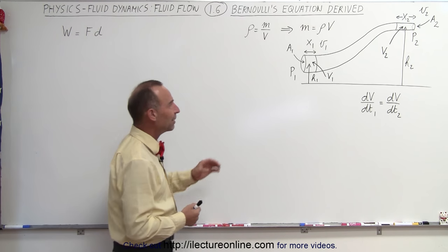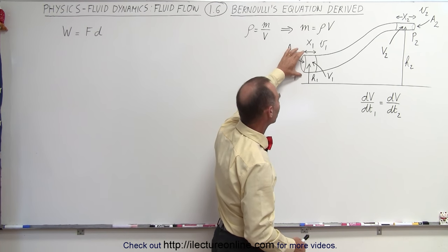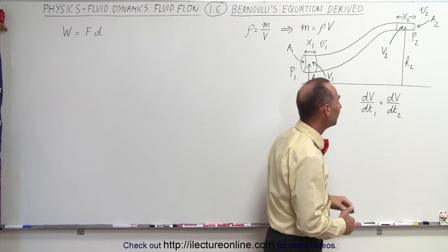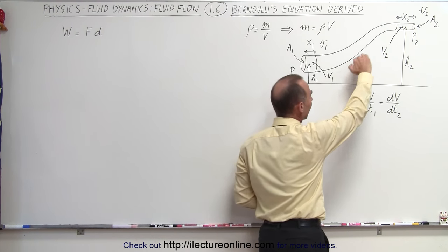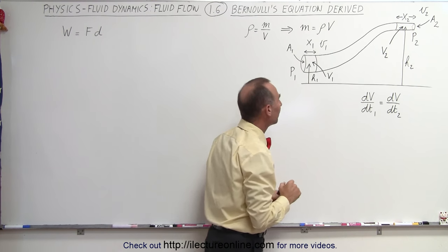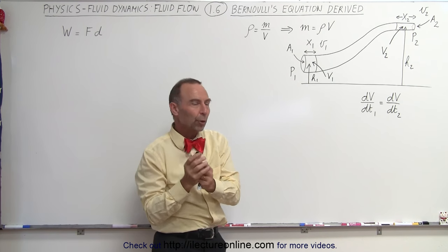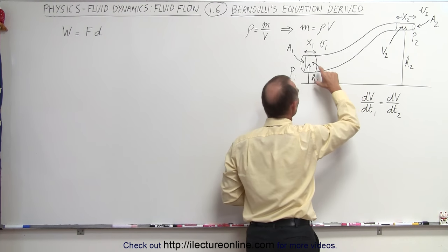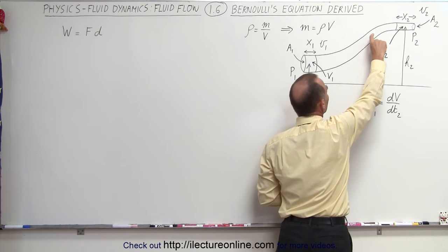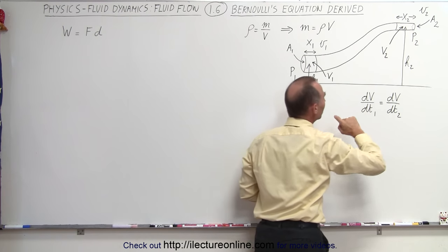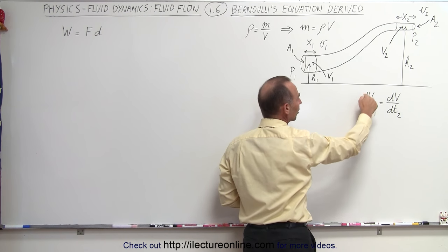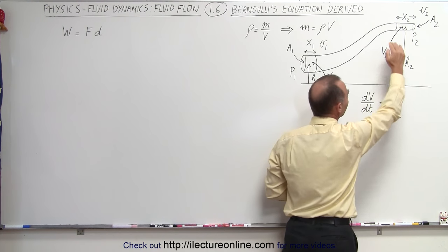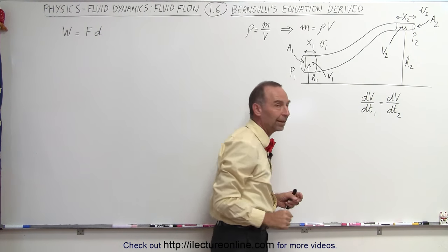Let's say that we have a pipe that has a larger cross-sectional area on one side and a smaller cross-sectional area on the other side. Also notice that the height has changed as well. We know that the amount of fluid flowing through the pipe has to be consistent all the way through. If the diameter gets smaller, the velocity has to increase so that the volume per unit time entering equals the volume per unit time exiting.